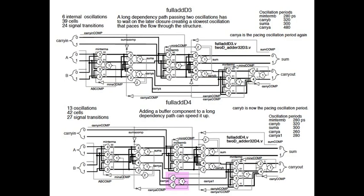Now we're going to turn every rank into an enable rank, taking the OR ranks as well. That gives us five internal oscillations. Again, we have a long propagation past two oscillations — this has to wait on those before it can close. Counting the delays around the oscillations, carry B is 320 ps but carry A is 480 ps, so carry A is the pacing oscillation.